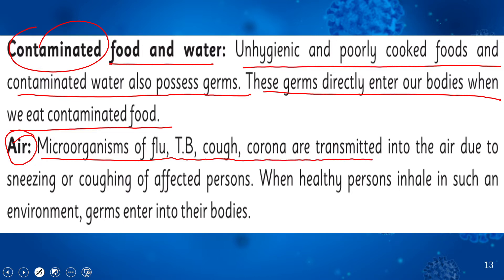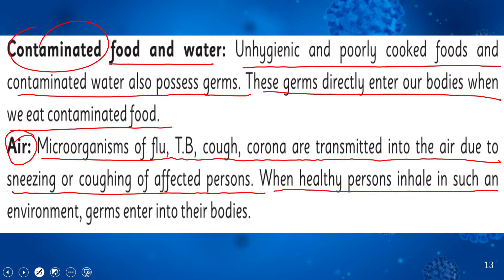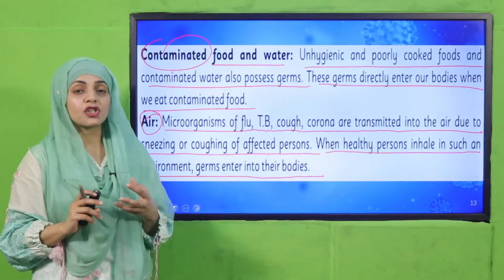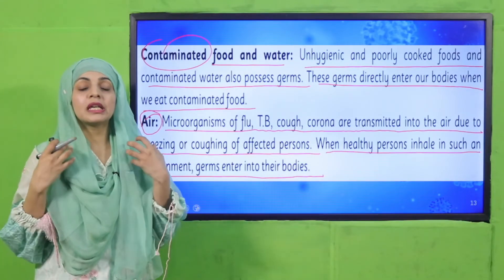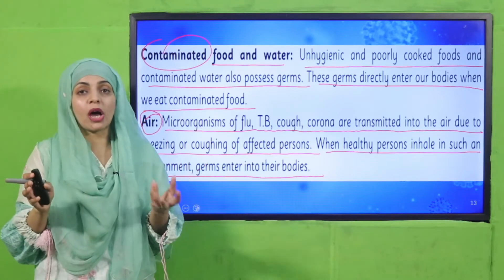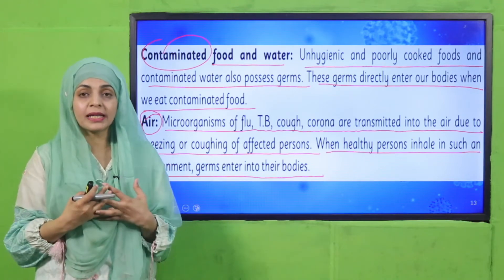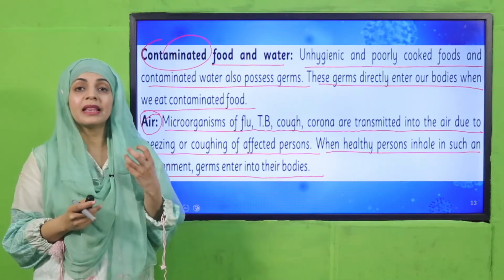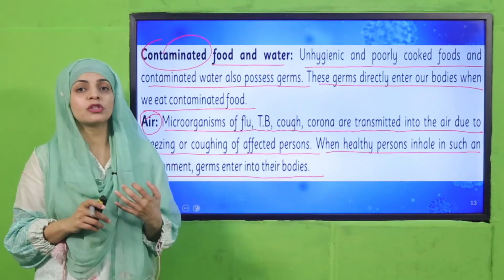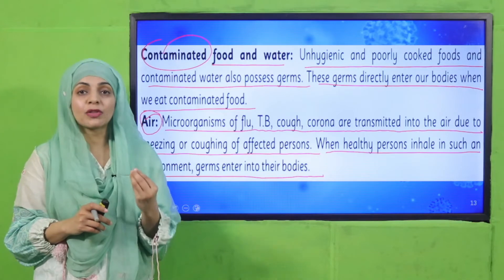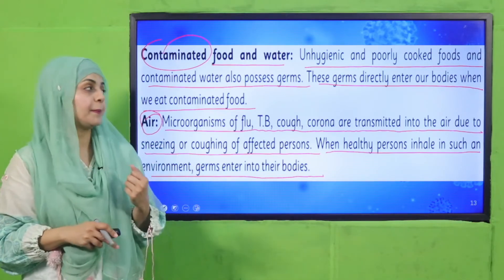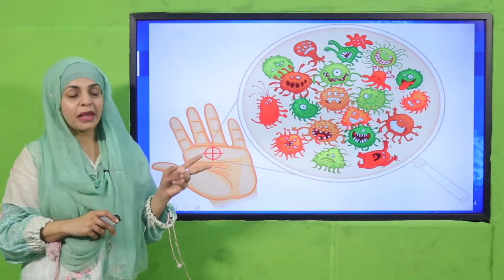Air is another transmission route. Microorganisms causing flu, TB, cough, and coronavirus are transmitted through the air due to sneezing or coughing of an affected person. When a healthy person inhales in such an environment, germs enter their body. If someone has flu, cough, or coronavirus and they sneeze or cough, their droplets release germs into the air, and a healthy person who inhales that air will most likely get affected.